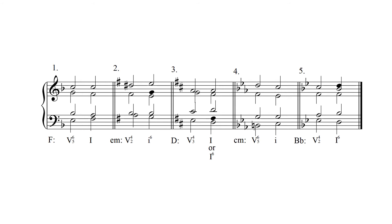Example three, in the key of D major, is a second inversion dominant seventh chord. The root of this chord is the A in the soprano. First, identify the chordal seventh — that is the G in the alto voice — and that pitch must resolve down by step to F sharp.